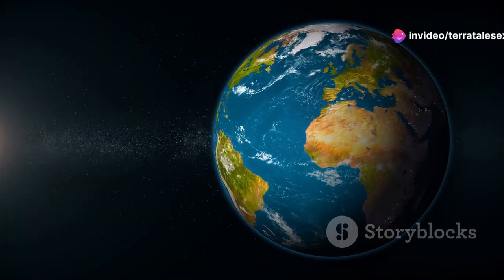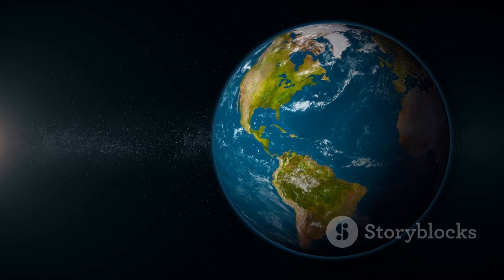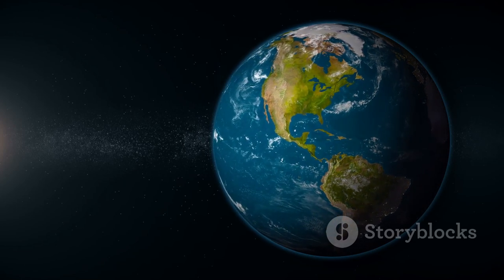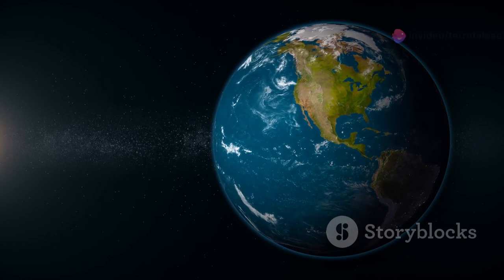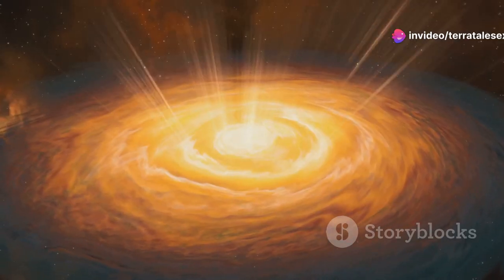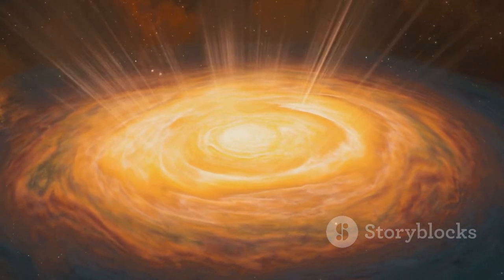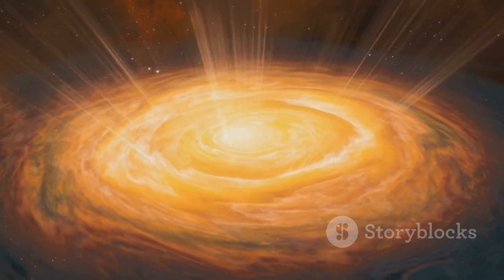The sun's powerful gravity continued to attract surrounding material, drawing it closer and closer. This material included countless particles and smaller celestial bodies, all being pulled into the sun's orbit. However, not all of it fell into the newborn star. Some of the material remained in the surrounding disk, continuing to orbit the sun.